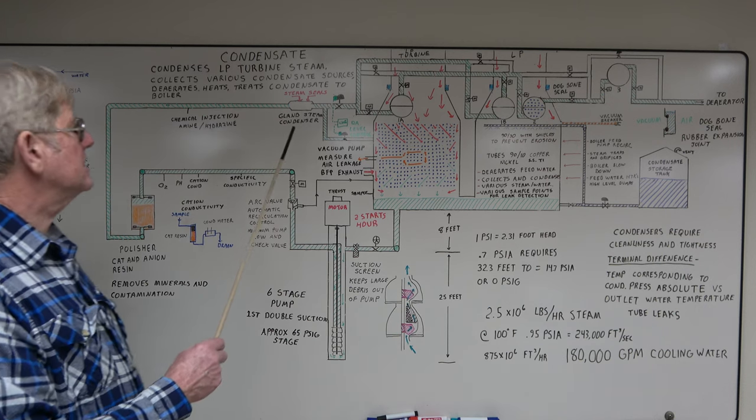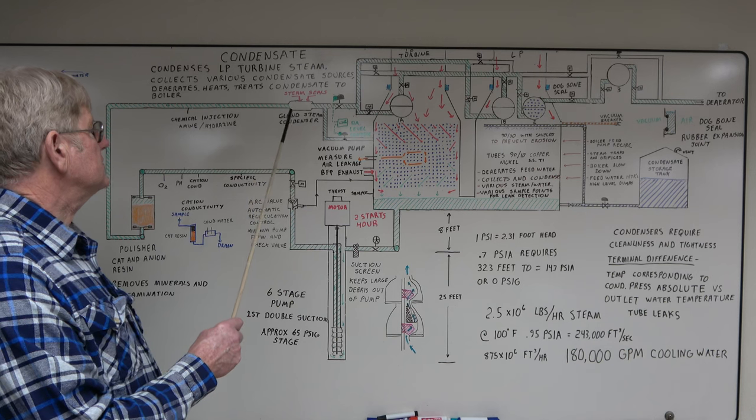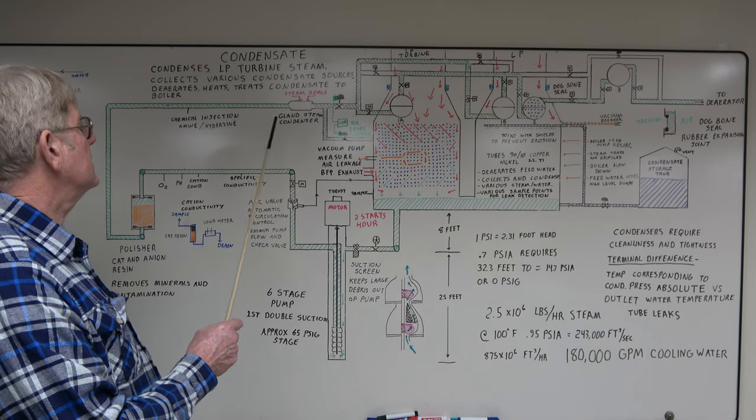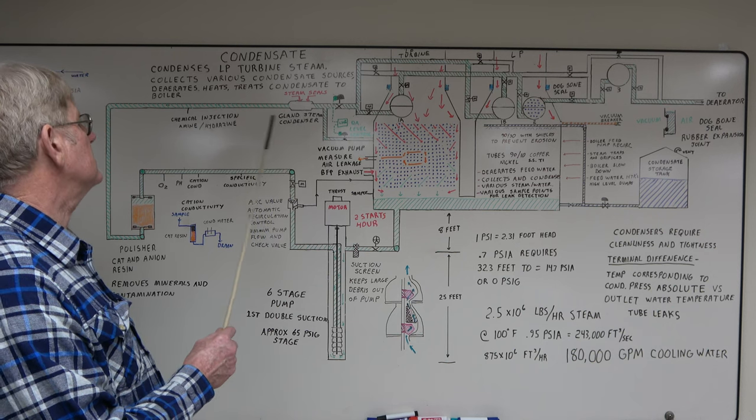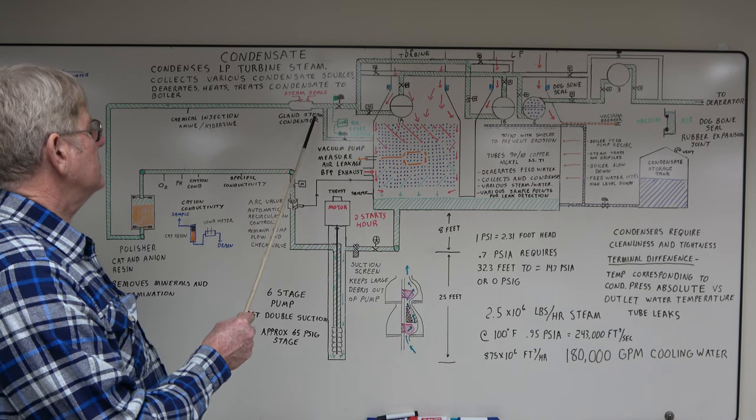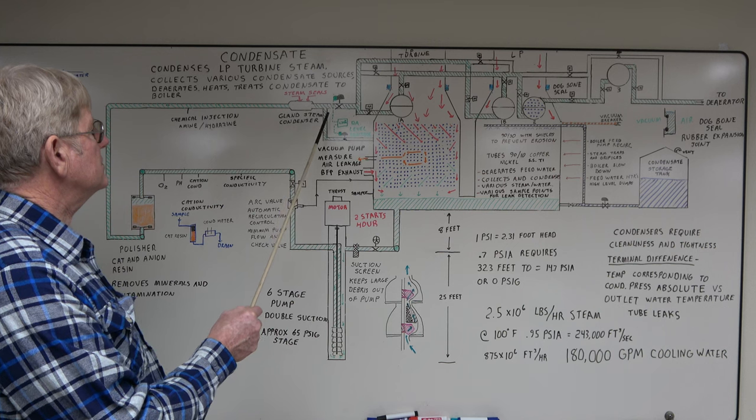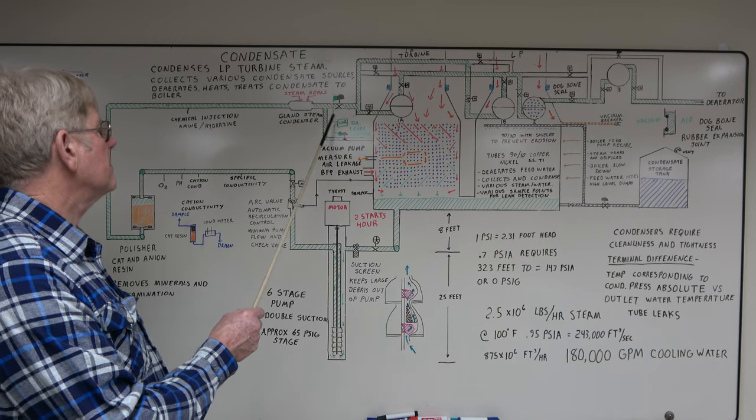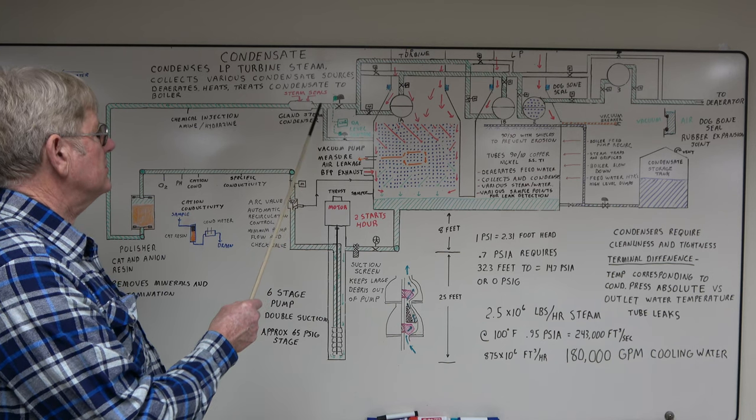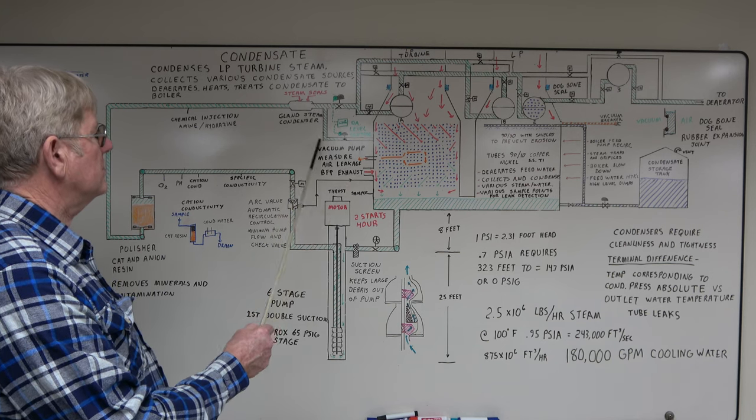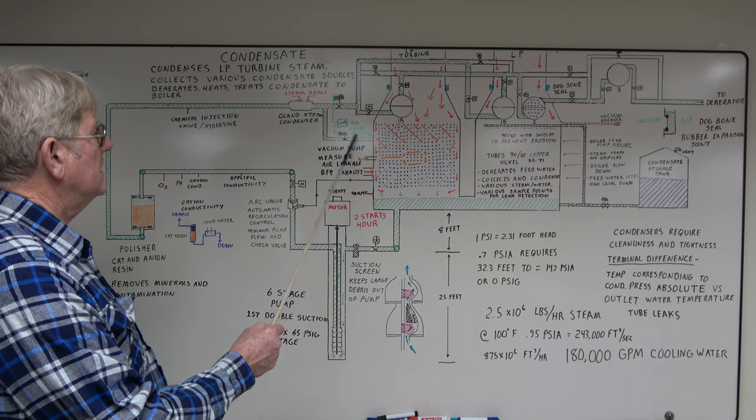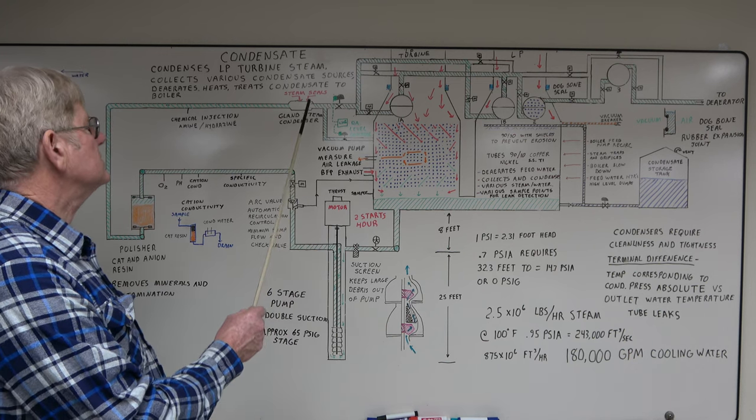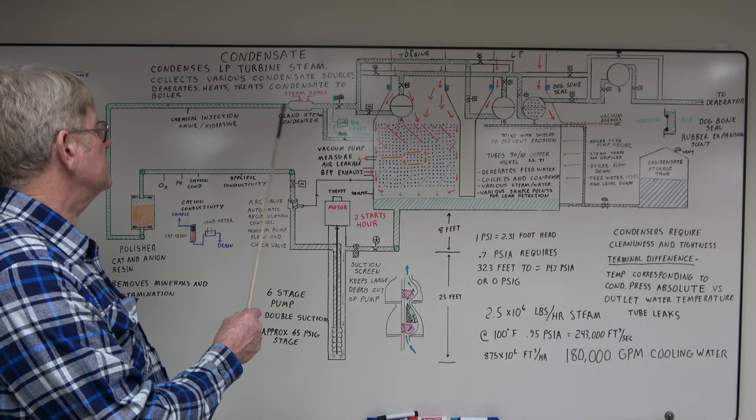This plant uses polishers, cation and anion resins in the bed mixed together. Takes all your positive and negative charged particles and also provides filtration of the water. From here goes to the gland steam condenser. This condenses all the excess steam coming from your steam turbine steam seals, your feed pump turbine and your main turbines. From here, you have a deaerator level control valve. It's downstream of the gland steam condenser. So if this shuts off at high deaerator level, the level control valve opens and maintains flow through your gland steam condenser. This is important as there's steam always coming back into your gland steam condenser.